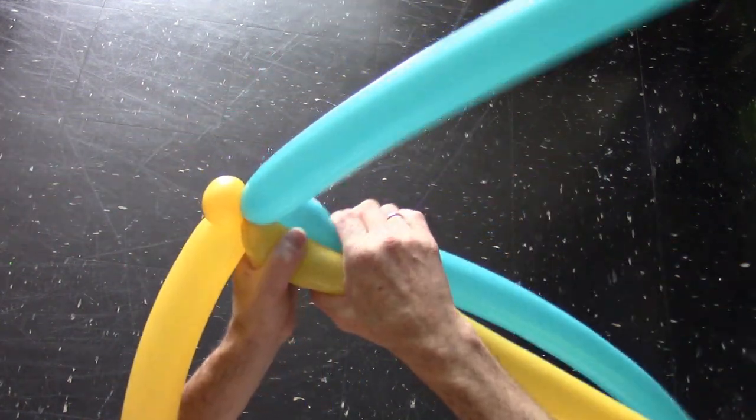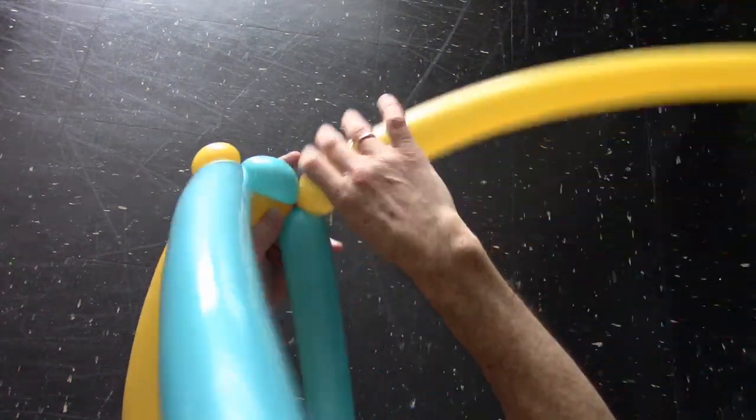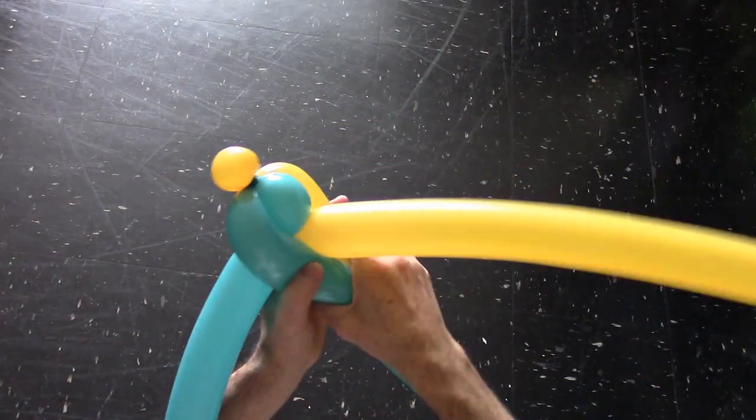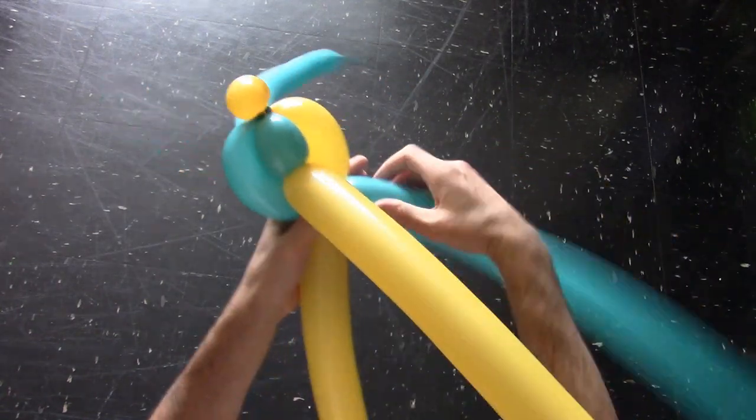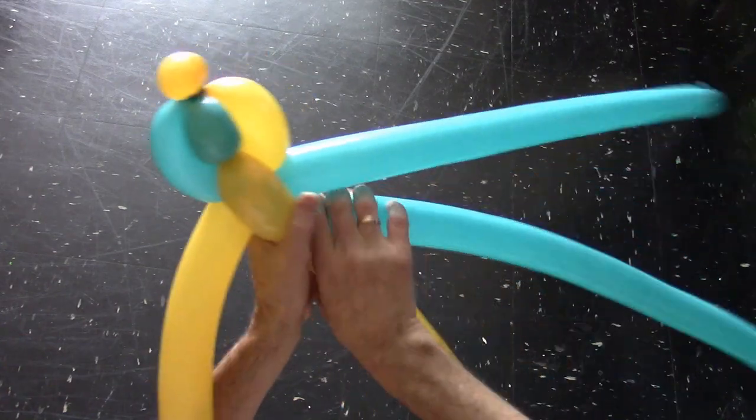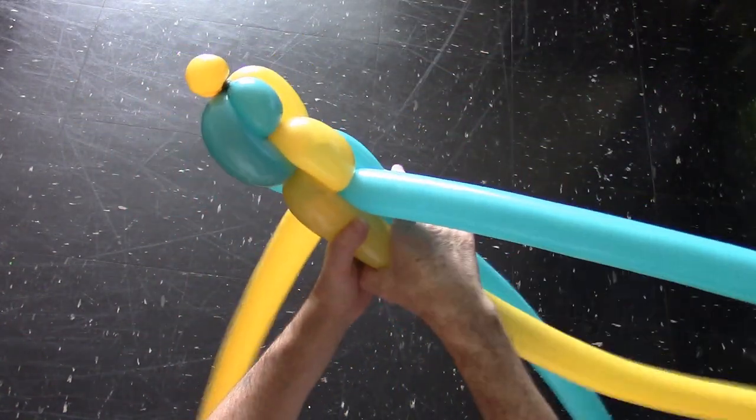We are going to work 2 balloons at the same time. Let's twist and lock the first pair half size long bubbles. In this example I made them about 7-8 cm long. Take the second pair of balloons, twist and lock full size bubbles. In this example I am making the bubbles of about 15-18 cm long.